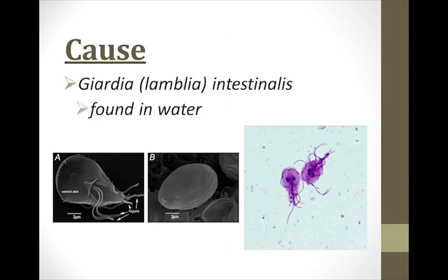Giardiasis is caused by an anaerobic parasite known as Giardia intestinalis, also referred to as Giardia lamblia. It's primarily found in water, which is why proper sanitation and water infrastructure is so important in controlling the spread of Giardiasis. This parasite can be found in one of two states: a cyst or a trophozoite.